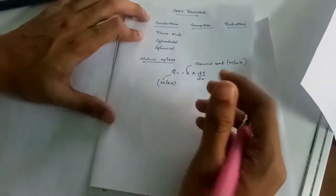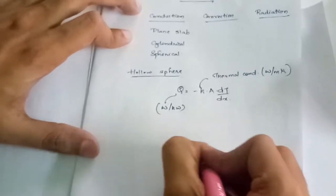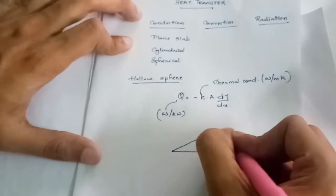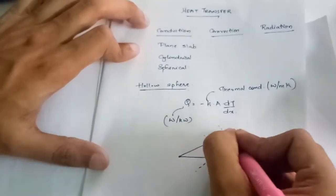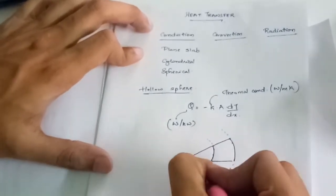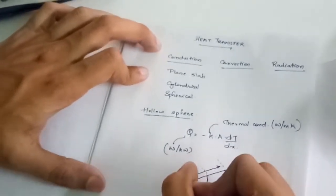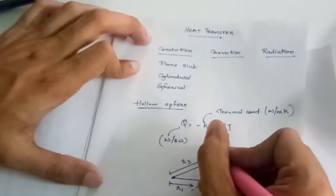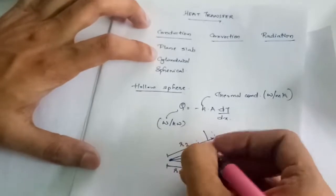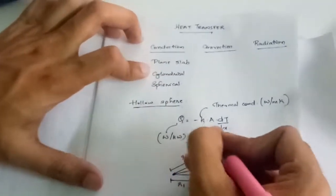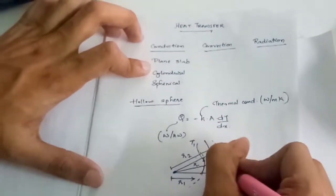In the hollow sphere, heat conduction takes place. Let's consider a hollow sphere cross-section. This is the complete sphere, with an inner diameter. The inner temperature is T1, and the outer temperature is assumed to be T2. At the outer radius, the surface temperature is T2.